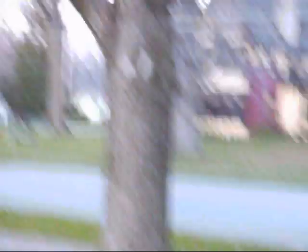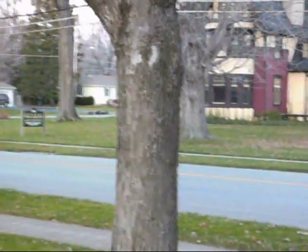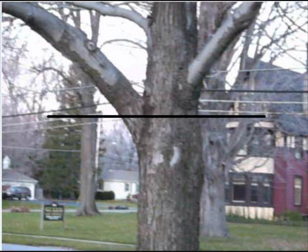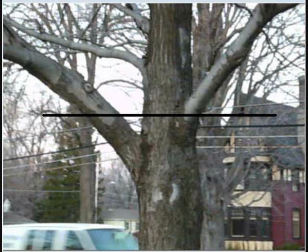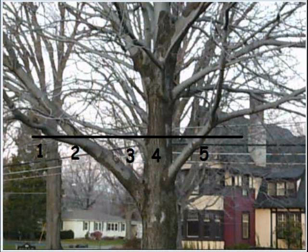Trees have obvious factors that will influence their growth, such as weather and us humans. If we look at this tree, we see the trunk right here is obviously one — there's one trunk. If we go up a little bit into the tree, we see that one branch grows out, giving us a total of two branches. Up a little higher, where that next branch grows out, we have three. Up a little further, one, two, three, four, five.